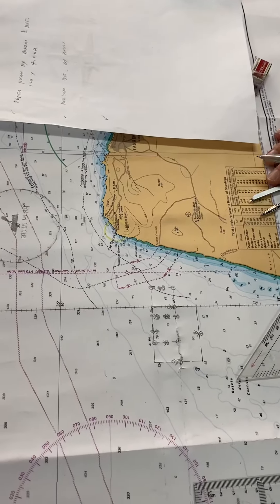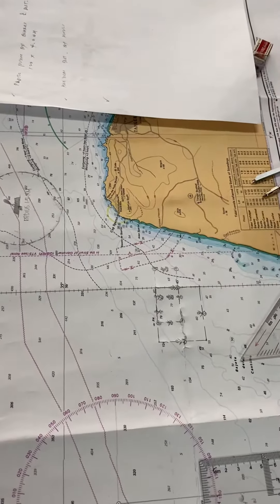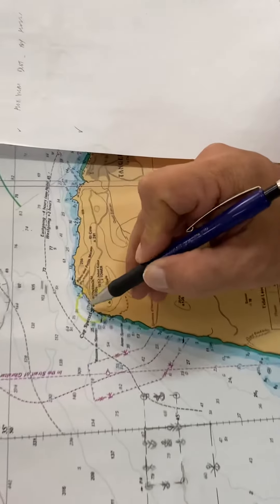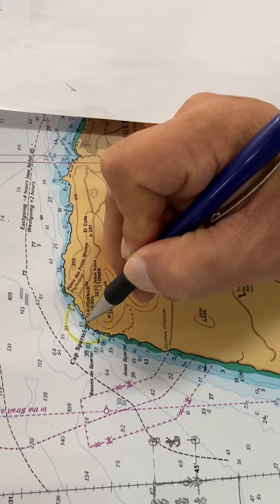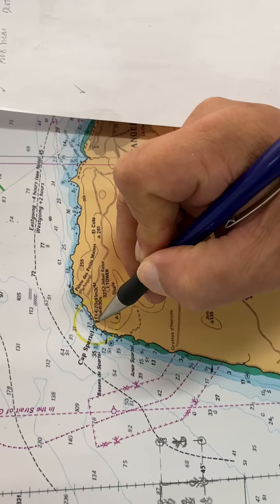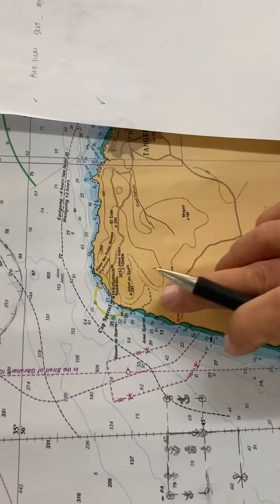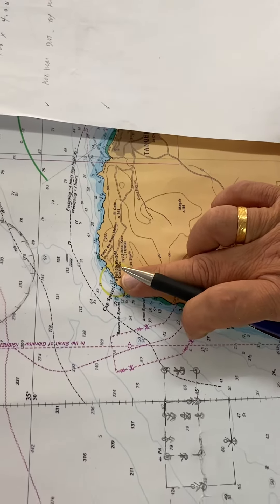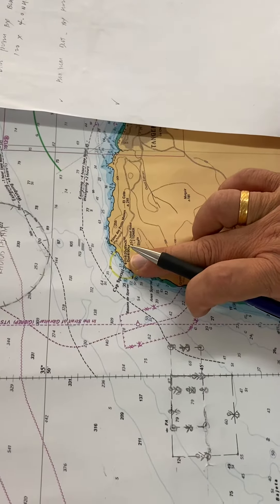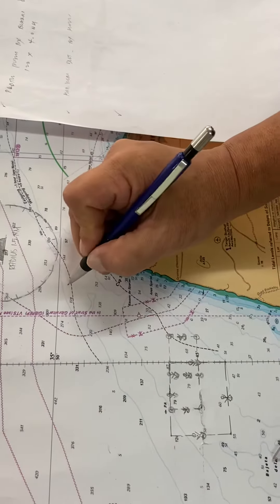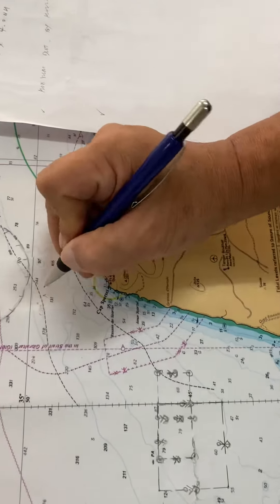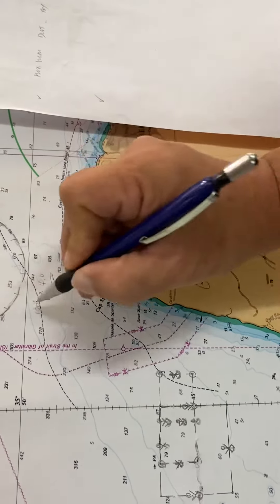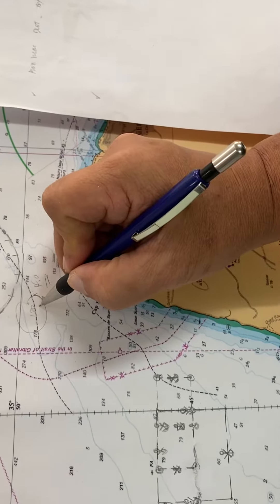For example, you have taken from your radar a position from Cap Spartel. This will be your reference point, shown here as the star. The bearing of Spartel is 120 degrees and the distance is four nautical miles. First, you need to put the bearing line.